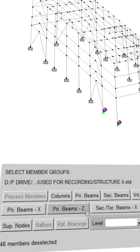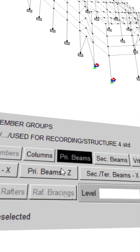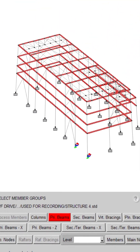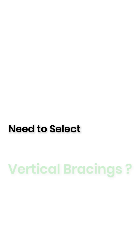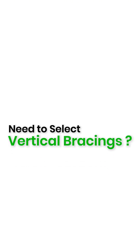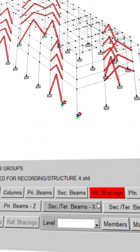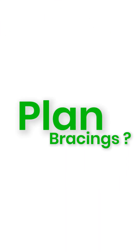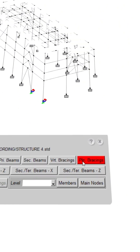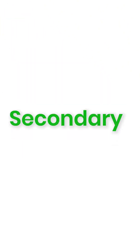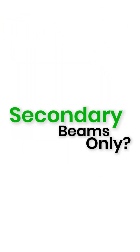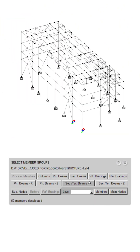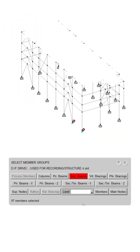Just press primary beams — done. Need to select vertical bracings? One click, done. Plant bracings? One click, done. Secondary beams only? You guessed it, one click, done.